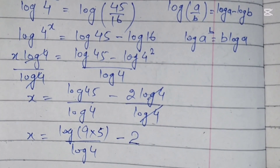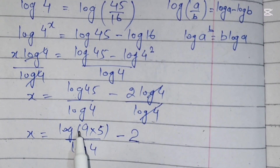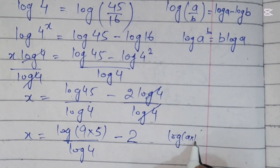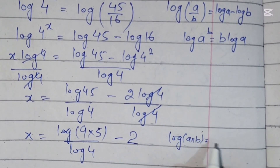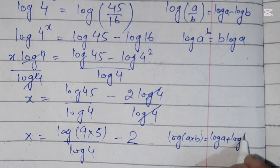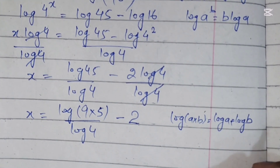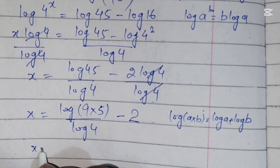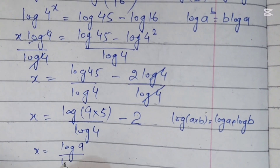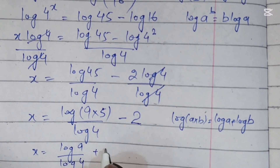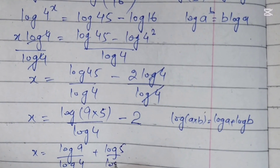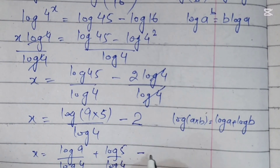Now 45 can be written as 9 times 5, so x equals log of 9 times 5 over log of 4 minus 2. We will use the formula in the numerator: log of a times b equals log of a plus log of b. So x equals log of 9 over log of 4 plus log of 5 over log of 4 minus 2.